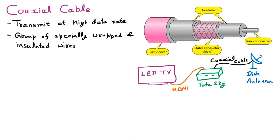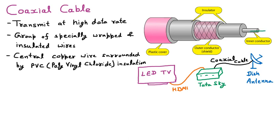The coaxial cable has a central copper wire surrounded by PVC insulation. When you plug the connector of Tata Sky or Dish TV in, the wire going inside is this central copper wire. The PVC insulation ensures the inner wire does not mix with the outer wire, since one carries positive and the other negative signals. The central wire is the inner conductor through which data passes.